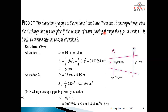Problem 1: The diameters of a pipe at sections 1 and 2 are 10 cm and 15 cm respectively. Find the discharge through the pipe if the velocity of flow at section 1 is 5 m per second. Determine also the velocity at section 2. Solution: Given data — at section 1, diameter D1 equals 10 cm or 0.1 m. The area at section 1, A1 equals pi by 4 times D1 squared, which equals 0.007854 m squared. Velocity V1 equals 5 m per second.